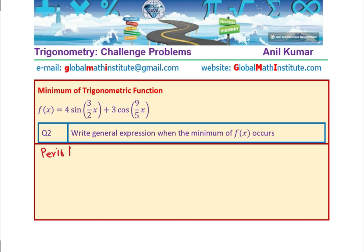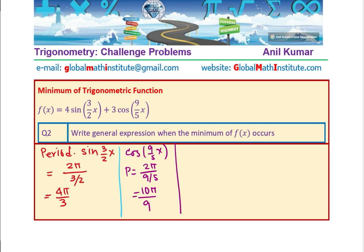What is the period for sine of 3 by 2 x? Well, the period is 2 pi divided by 3 by 2. So, that gives you 4 pi by 3. So, 4 pi by 3 is the period for sine 3 by 2 x. What is the period for cos of 9 by 5 x? Well, the period for this is 2 pi by the k value, 9 by 5. So, that gives you 10 pi by 9. So, 10 pi by 9 is the period for cos.